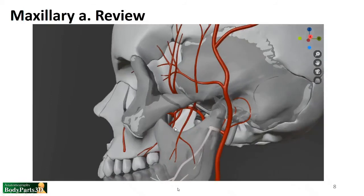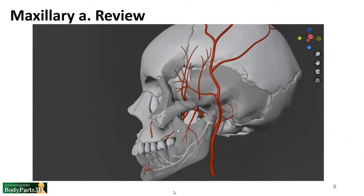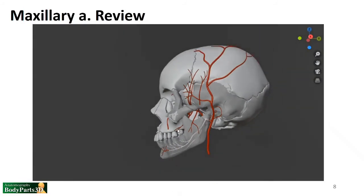So we'll pick up and talk more about the maxillary artery and all of its branches, at least of the first and second part, in the next session. Again, we'll start here by trying to make sure we know the ones that go to the meninges, the TMJ, and the muscles of mastication.